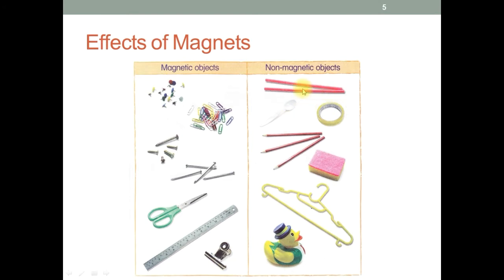In the second column, you can see the objects which do not get attracted towards the magnet, such as straws, plastic spoons, cello tape, pencils, sponge, plastic hanger, and rubber duck.